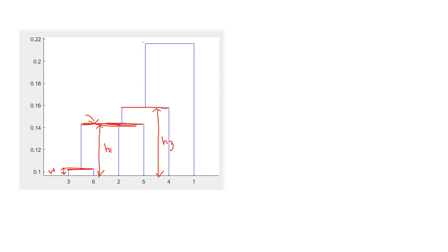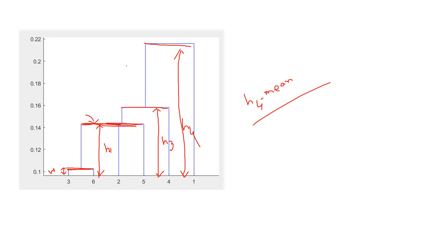For a link with height H4, the inconsistency factor is H4 minus the average of the heights below it — H3, H2, H1 average. You can also incorporate the standard deviation of the inconsistency values: (H4 minus mean of heights below) divided by the standard deviation. This is also one possible way to compute it.